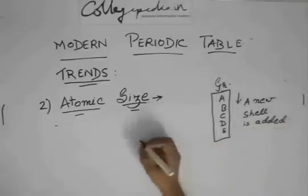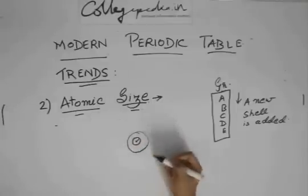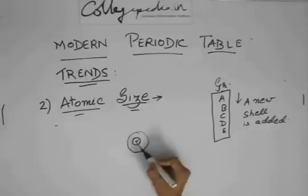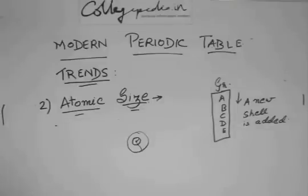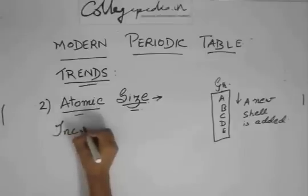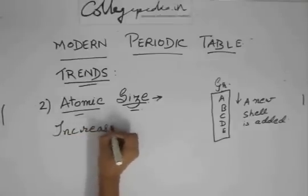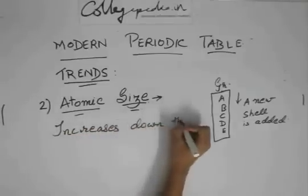If a new shell is added, then what will happen to the atomic size? Suppose this had one shell. Now it has two shells. Its radius was this much. Now it's this much. Obviously, the radius will increase. Due to the addition of the new shell, the atomic size increases down the group.